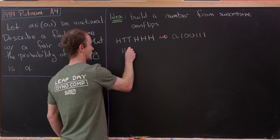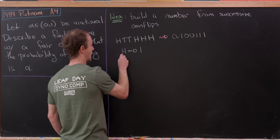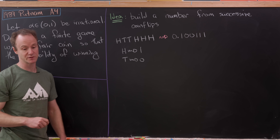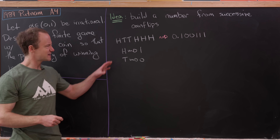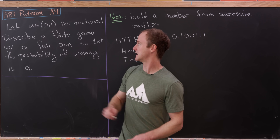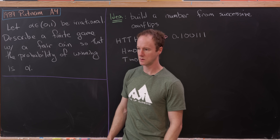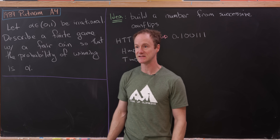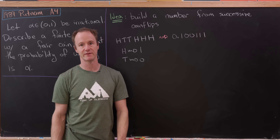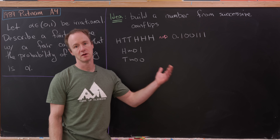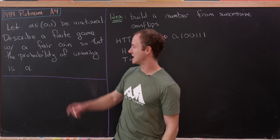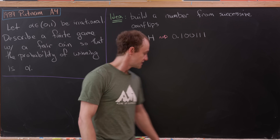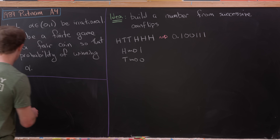A coin flip of heads gives us a 1 and a coin flip of tails gives us a 0. But notice that this number can't give us any number between 0 and 1 unless we use a base system different from base 10 — the biggest it can be in base 10 is 0.1111... repeating. So we need to view this in base 2.